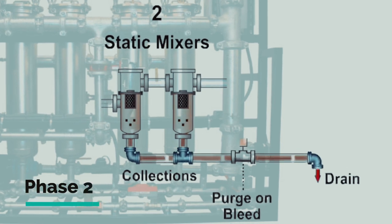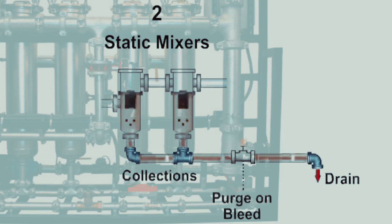Phase 2 is the static mixer debris removal process. The smaller suspended particles have now grown larger to a critical mass, causing them to precipitate into static mixers by gravity.